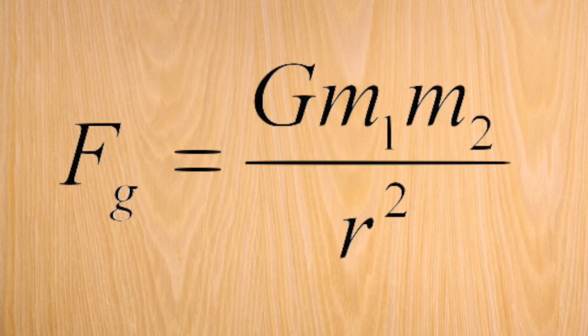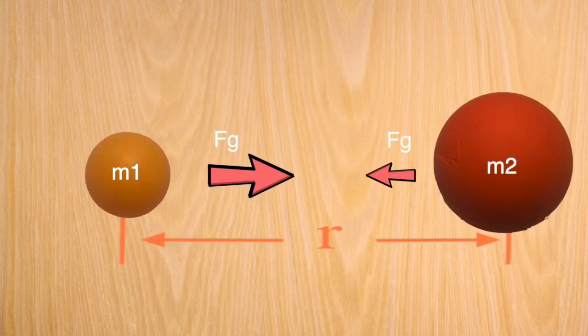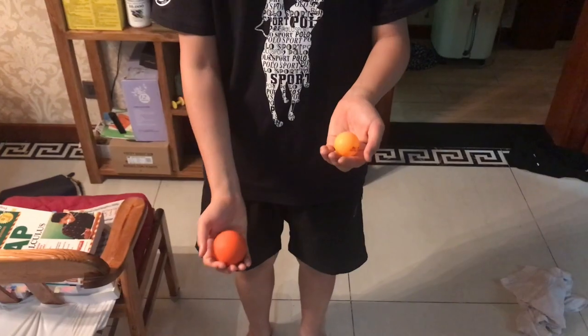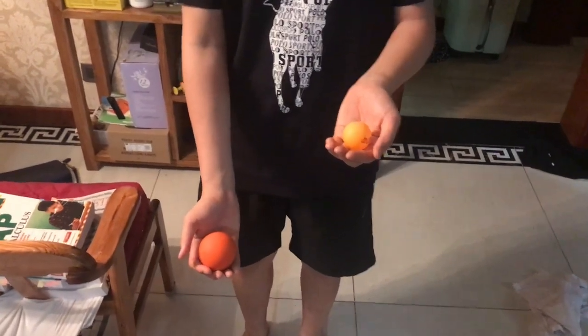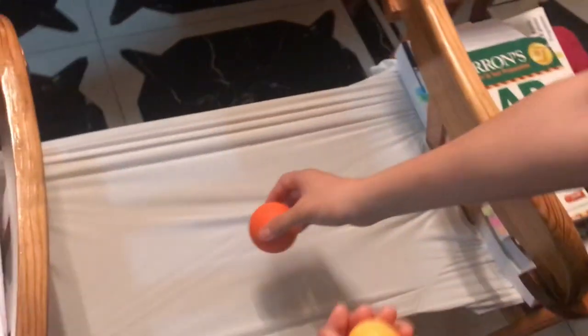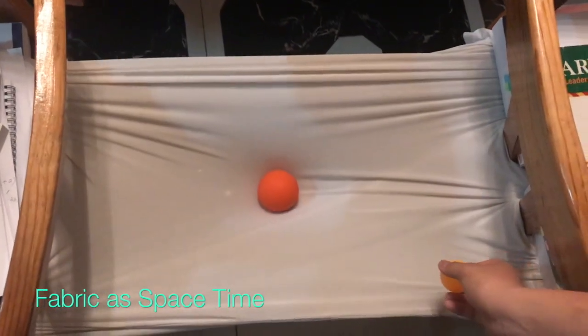While Newton only defined gravity as the attraction force between two masses in the universe, without a clear explanation, Einstein described gravity as the result of curved space-time, caused by the uneven distribution of mass, like this.